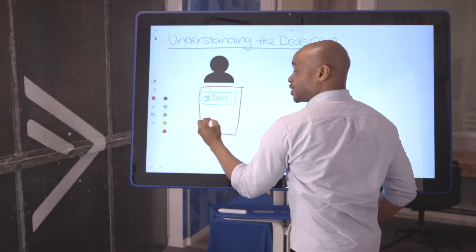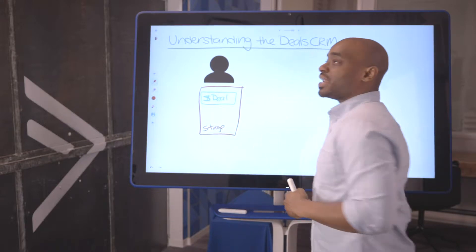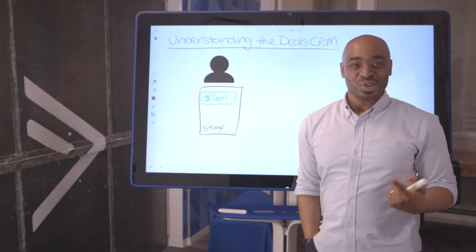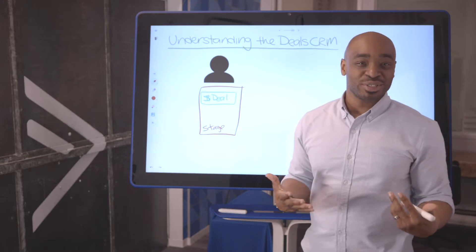So I'm just going to draw a stage here and just write stage. Now, what good is one deal on one stage? That's a good start. We want to automate our sales.